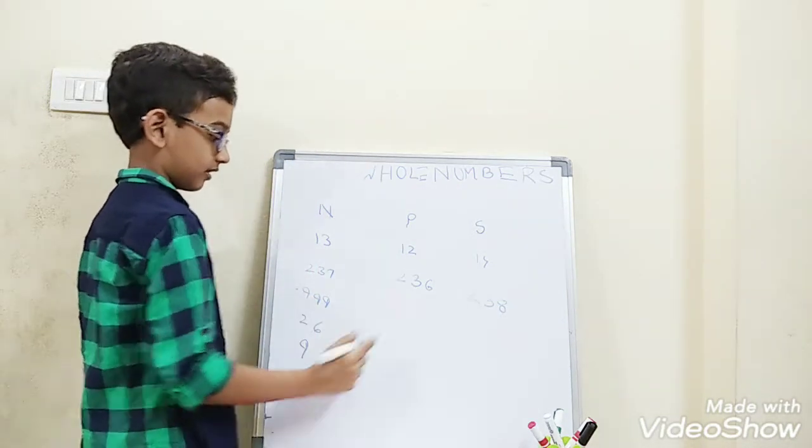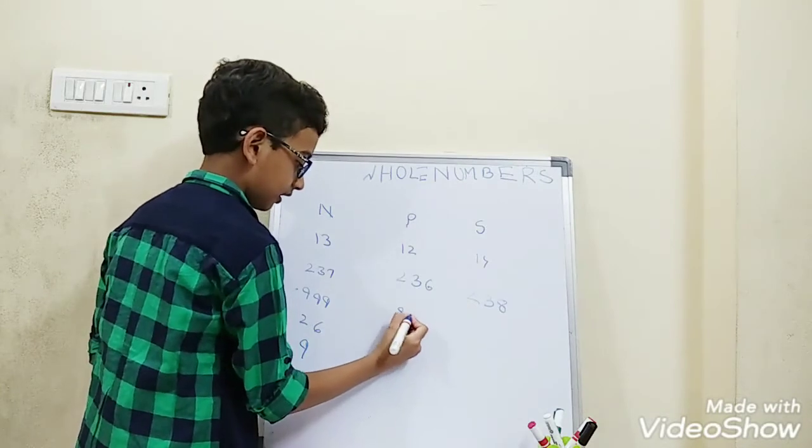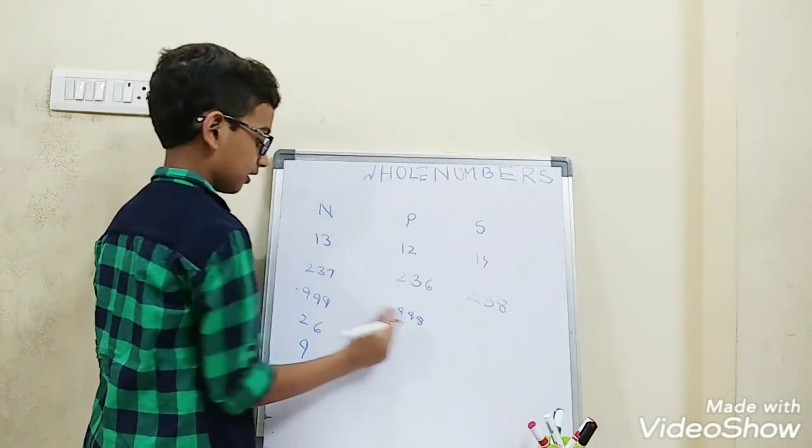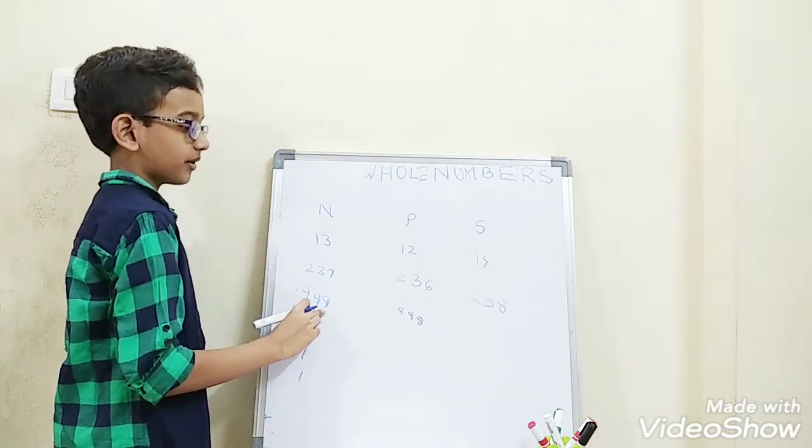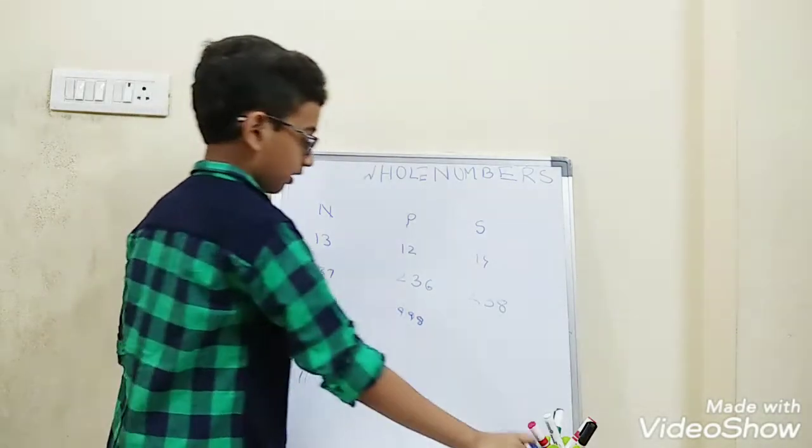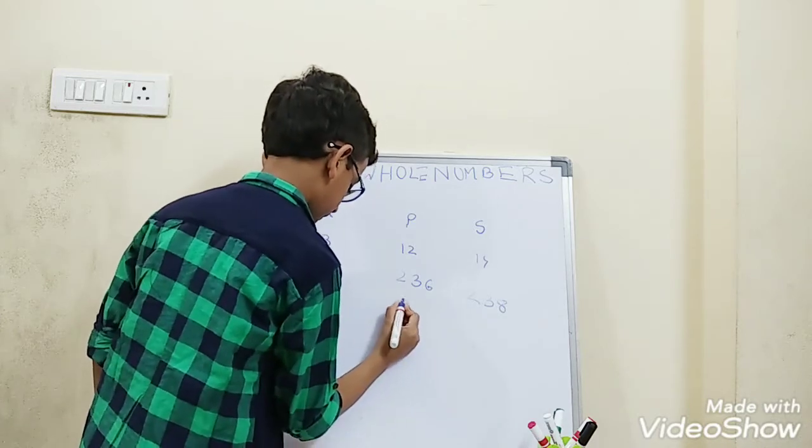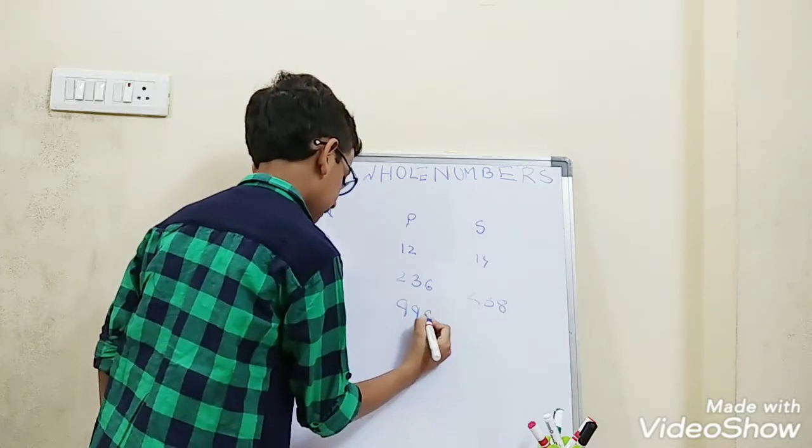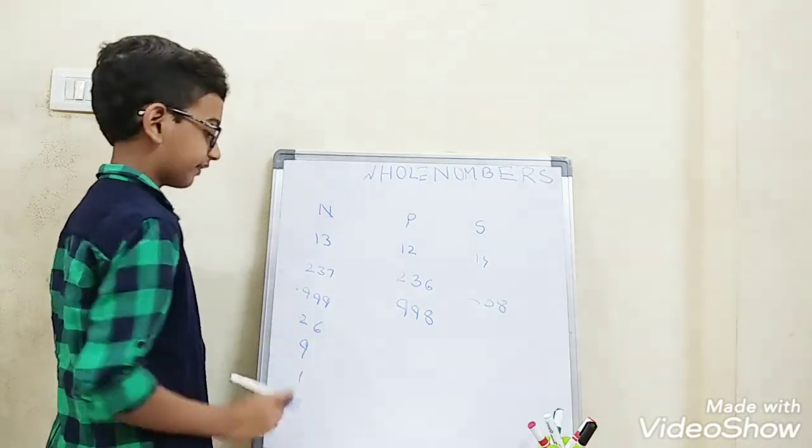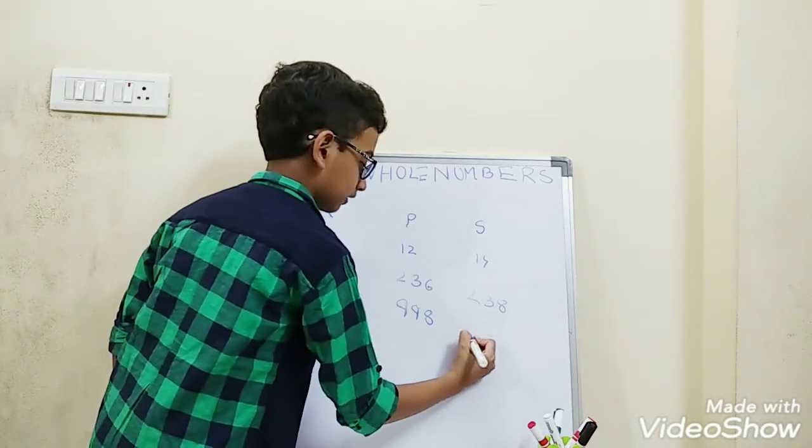999. The predecessor is 998. This 9's before number is 8. 9's before number is 8, so 998. The after number is 1000.